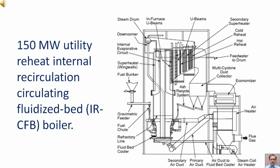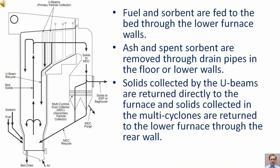In the diagram, 150 megawatt utility reheat internal recirculation circulating fluidized bed boiler is shown. Fuel and sorbent are fed to the bed through the lower furnace walls. Ash and spent sorbent are removed through drain pipes in the floor or lower walls. Solids collected by the U-beams are returned directly to the furnace and solids collected in the multi-cyclones are returned to the lower furnace through the rear wall.